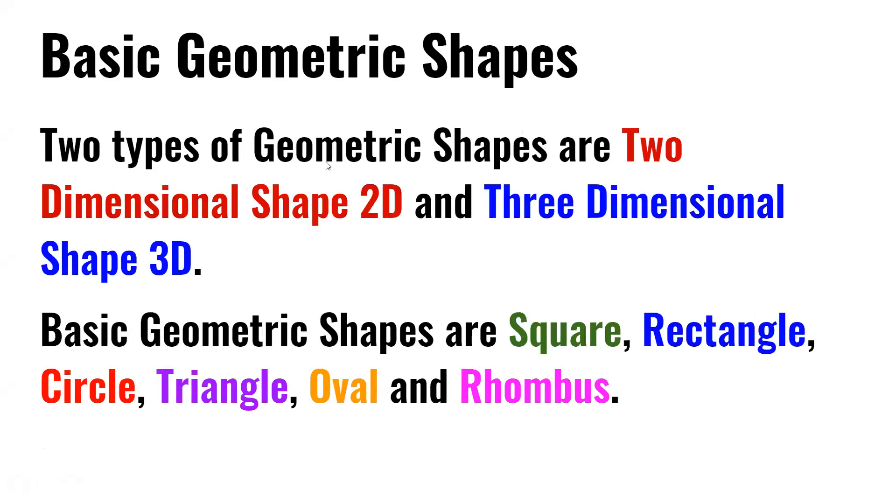The two types of geometric shapes are two-dimensional shapes, or 2D, and three-dimensional shapes, or 3D.